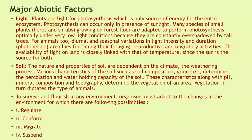The next factor is light. Plants use light for photosynthesis, which is the only source of energy for the entire ecosystem, and photosynthesis can occur only in the presence of sunlight. Many species of small plants like herbs and shrubs growing on the forest floor are adapted to perform photosynthesis optimally under very low light conditions because they are constantly overshadowed by tall trees. For animals too, diurnal and seasonal variations in light intensity and duration — that is photoperiod — are clues for timing their foraging, reproductive and migratory activities. The availability of light on land is closely linked with temperature since the sun is the source for both.